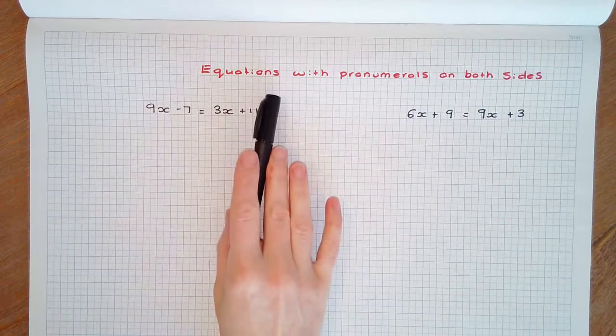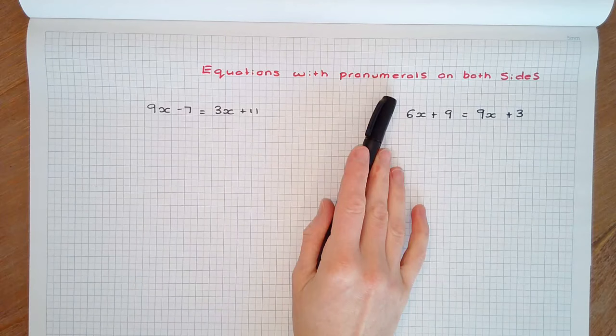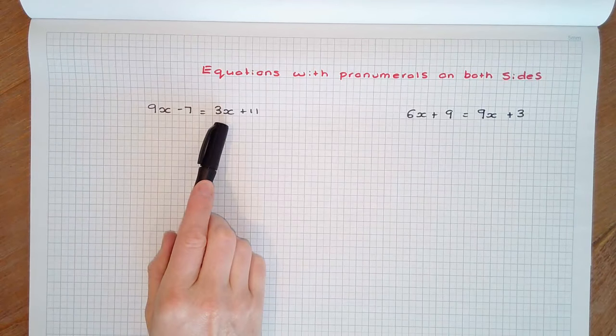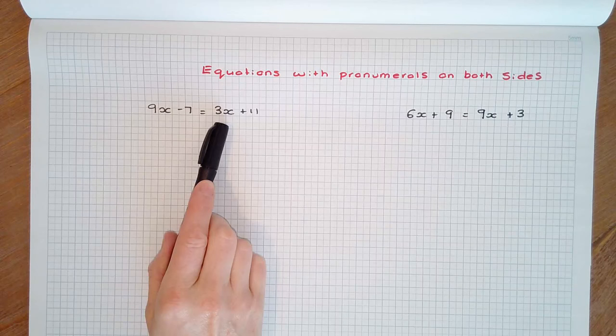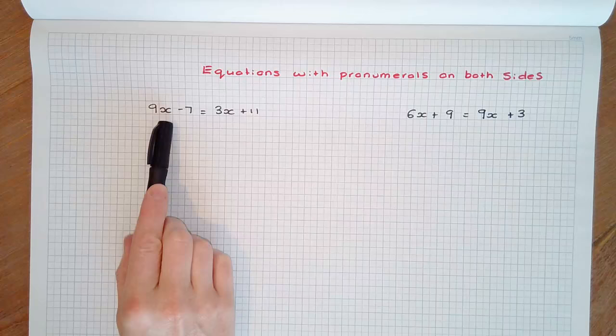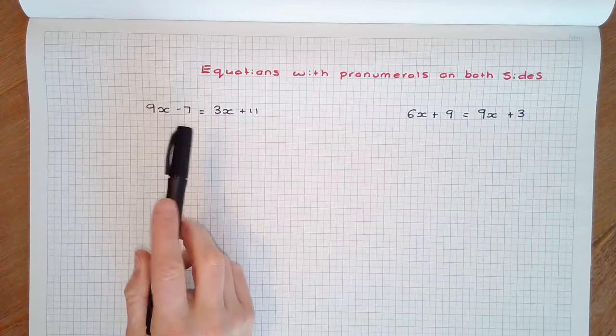In this video, we're going to have a look at equations with pronumerals on both sides. When there are pronumerals on both sides of the equation, the first step is to get all the terms involving the pronumeral on the same side of the equation sign, then continue to solve the equation as previously done.